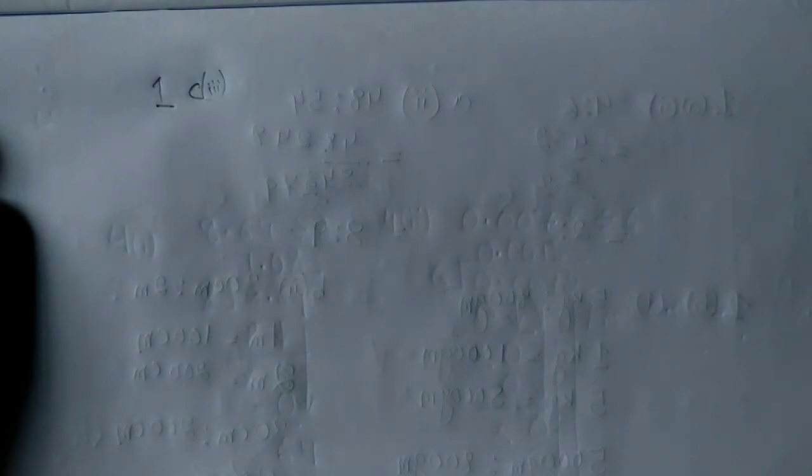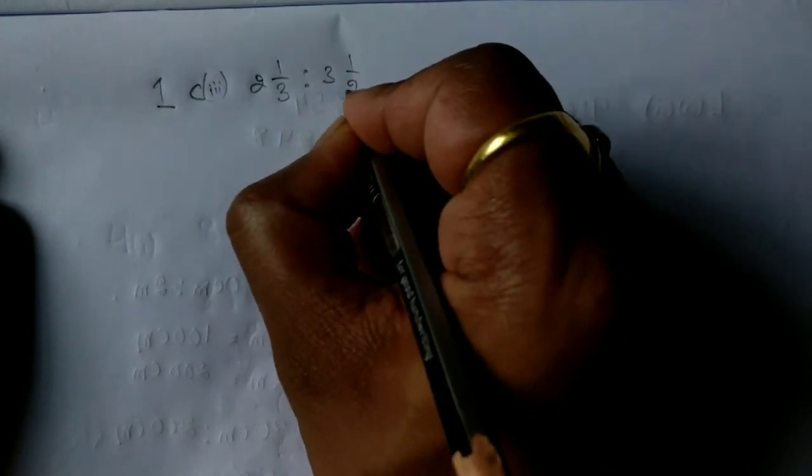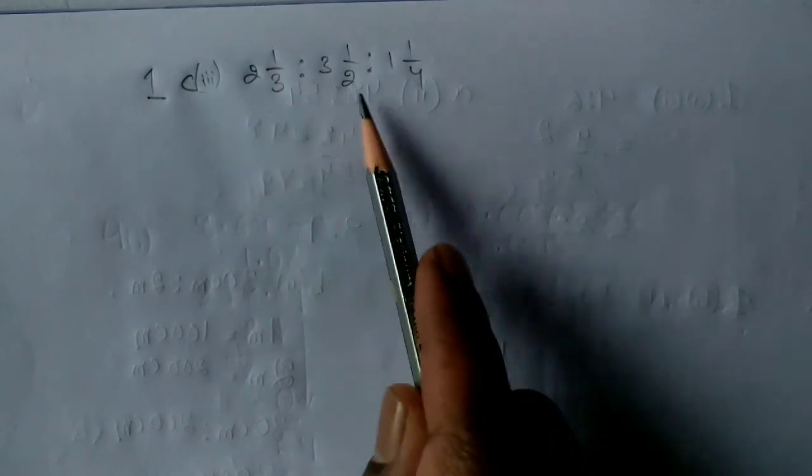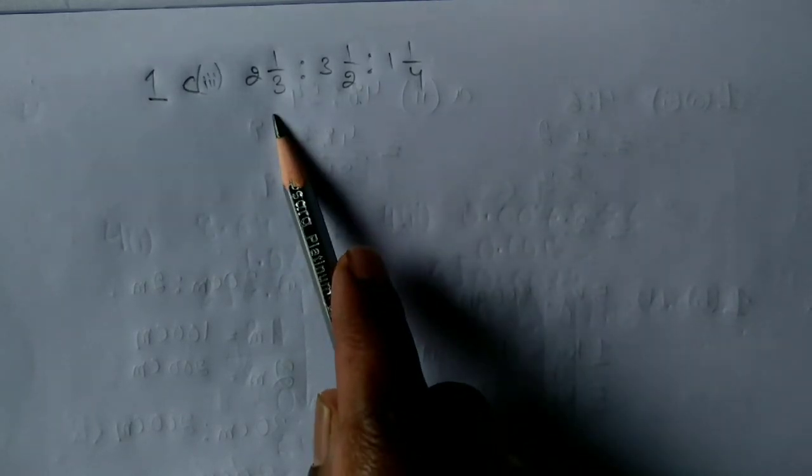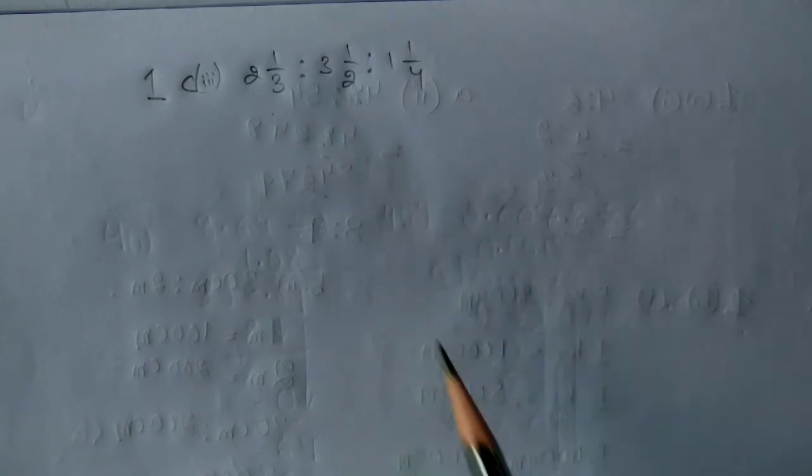Please refer your book for the question 1c3. The question reads as 2 1 upon 3 is to 3 1 upon 2 is to 1 1 upon 4. As we have studied in ratio, there used to be only two numbers. The first one was called antecedent and the next one is called consequent. But here we can see there are three terms in a ratio, and you have to simplify it.